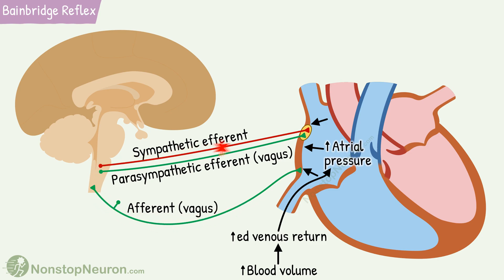The signals go to the medullary control center. From here, the efferent signals travel in sympathetic and parasympathetic nerves to the SA node and stimulate it. This results in an increased heart rate. Thus, an increase in venous return or increase in atrial pressure increases the heart rate.